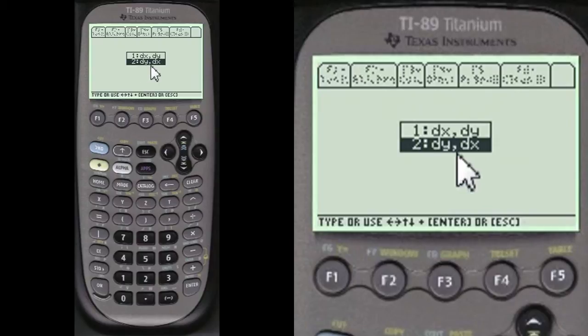And now we have to decide whether we want to do it from dy dx or dx dy. That's the order of integration. We're going to do it with number 2 dy dx today.